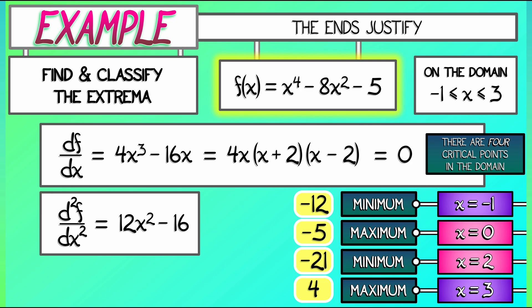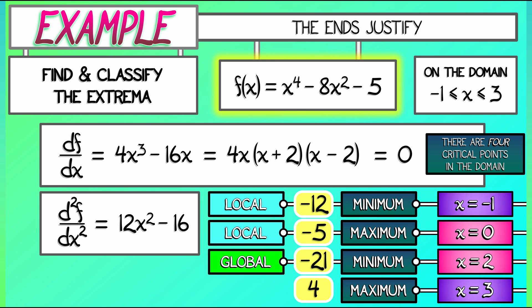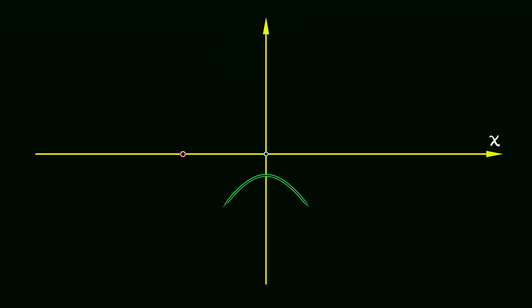At x equals negative 1, what we really have is a local minimum. Because there is a global minimum at x equals 2, that value of negative 21 dominates. The maximum at x equals 0 is a local maximum at negative 5, as opposed to the global maximum at x equals 3. And all of this matches what we see when we graph the function out.